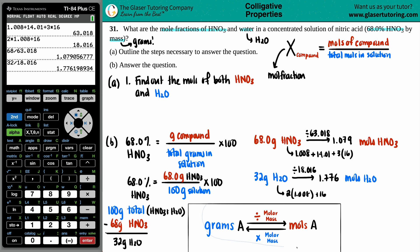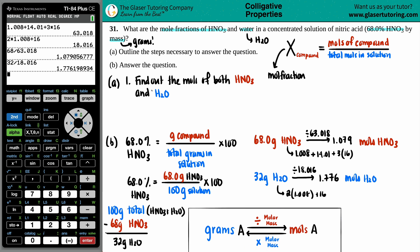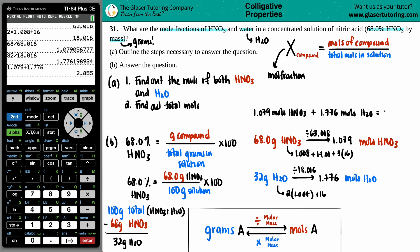Okay, beautiful. Maybe I'll just move this a little bit down. The second thing that we have to do now is keep in mind we now have the moles of each component, 1.079 moles of HNO3, 1.776 moles of H2O, I need to find out the total moles. So, find out total moles. The total moles is of the whole entire solution. So, I know that I have 1.079 moles of HNO3, plus 1.776 moles of the H2O, and that's your entire solution, because those were the only two things that were in the solution. So, we get 2.855 moles total.